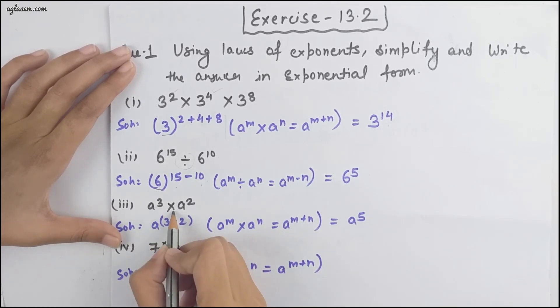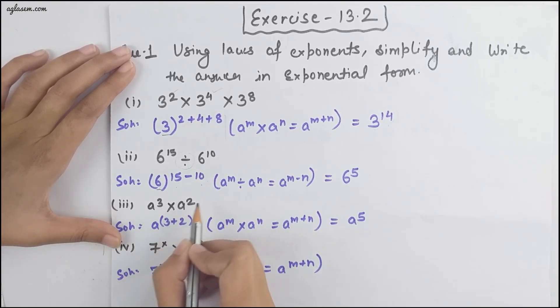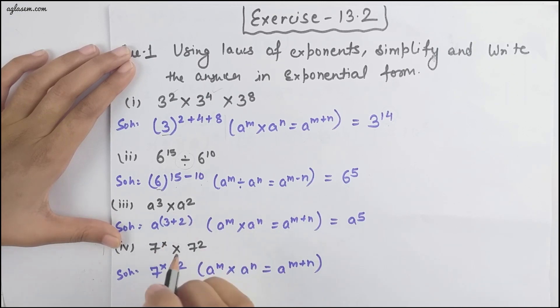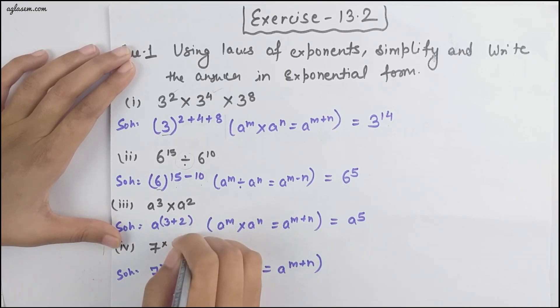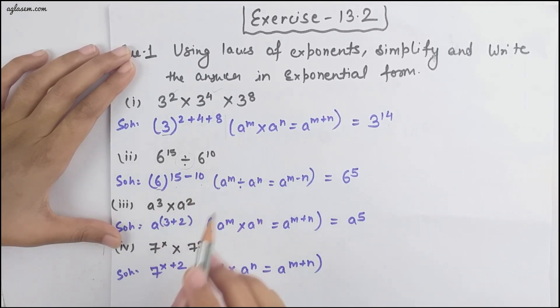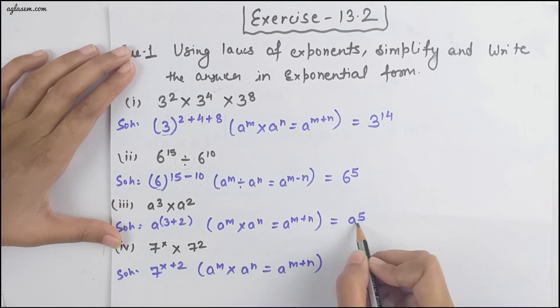Moving to the next part, we have a raised to the power 3 into a raised to the power 2. We solve it the same way as before — since the base is the same, the powers get added — giving us a raised to the power 5 as our answer.